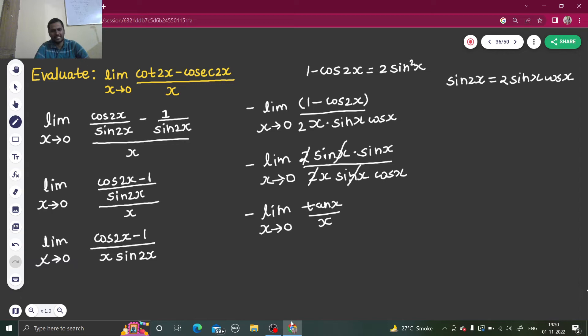Now this is a standard limit. I don't think this is new to you. You already know the standard limit: limit x tending to 0, either sine x by x or tan x by x, that gives you 1. So this is 1 with a negative sign. So finally the value which I am getting is equal to minus 1.